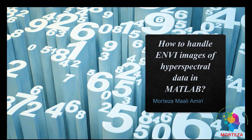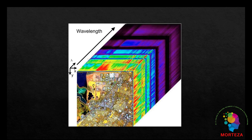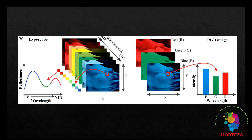I want to talk about how to handle ENVI images of hyperspectral data in MATLAB. Hyperspectral images contain the spectrum for each pixel in the image of a scene. They have been used for many purposes such as finding objects, identifying materials, or detecting processes. These sorts of data are a type of image with both spectral and spatial information. Spectral information would be along this axis and spatial information would be along the x and y axes. So the hyperspectral image is in a sense a cube that contains the spectral reflectance data for each point in the image.